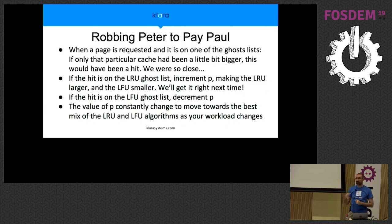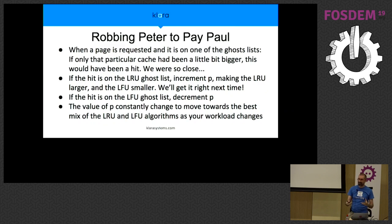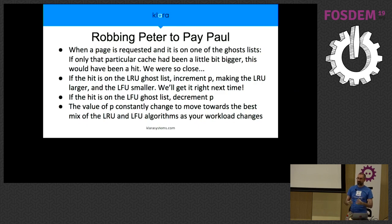We keep doing this every time we get a miss that could have been a hit if the recently used list was bigger, sliding the partition from 50% towards 100% MRU. But if the hit was on the frequently used ghost list, we slide that slider back the other way. This is what makes the cache adaptive — as your usage changes, it decides which cache is more effective. If you have a database using the same data frequently, the frequently used cache gets bigger; if you use recently accessed but not repeated data, the recently used list grows.